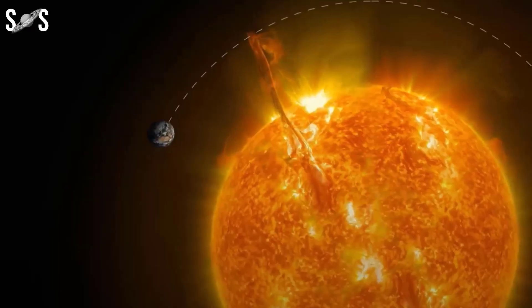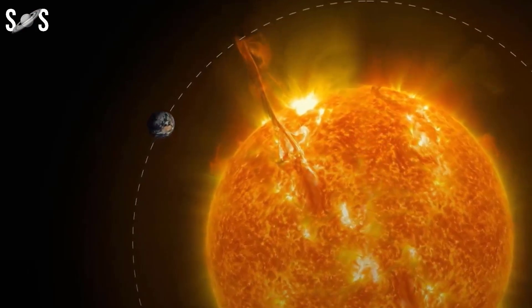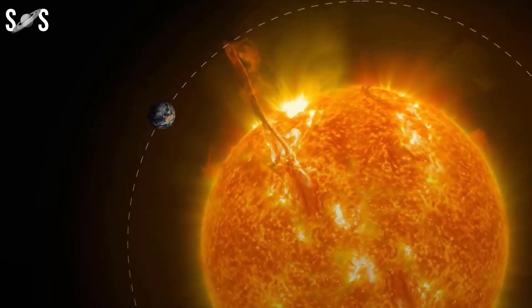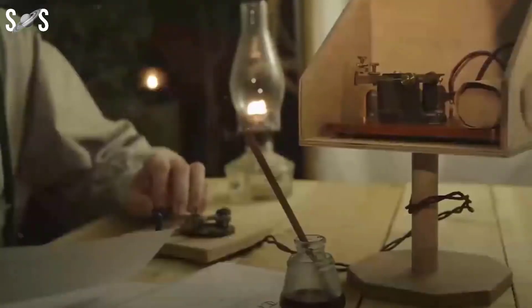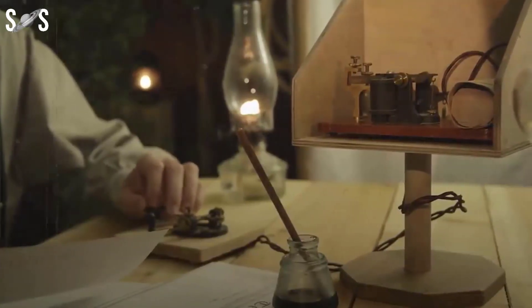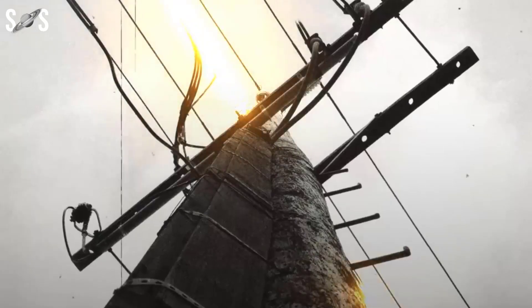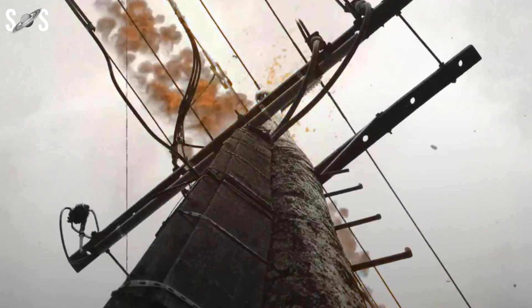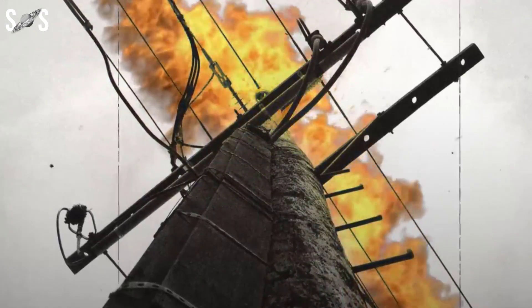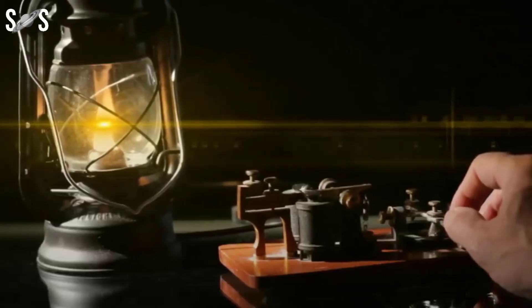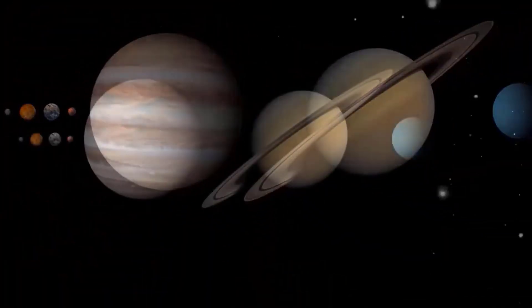A solar storm is a disturbance on the sun that can release charged particles that interact with Earth's magnetic field and atmosphere. They can cause geomagnetic storms and global disruptions, damage technology like power grids and satellites, produce phenomena like the northern lights, and affect our biological functions.